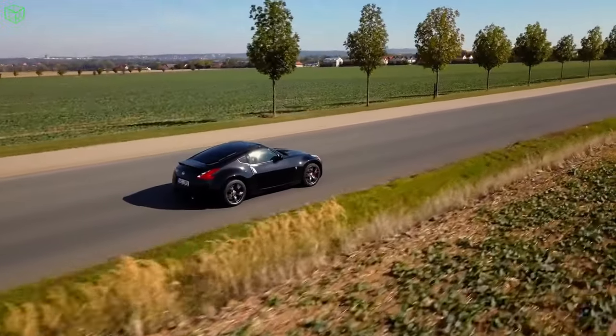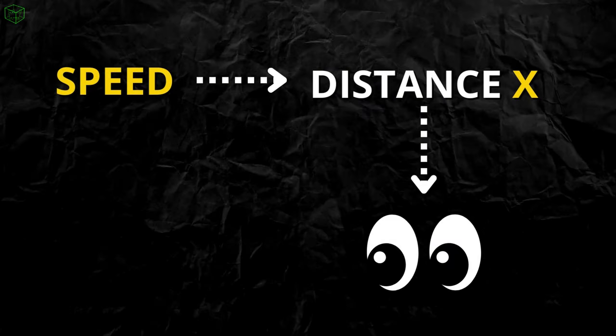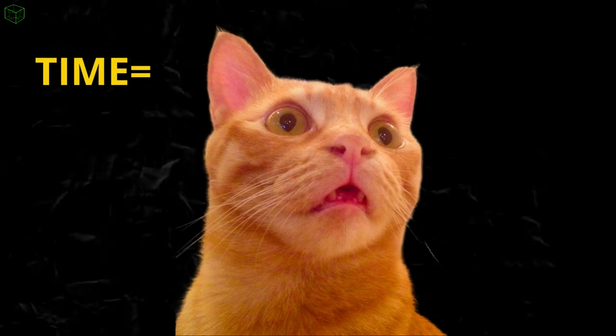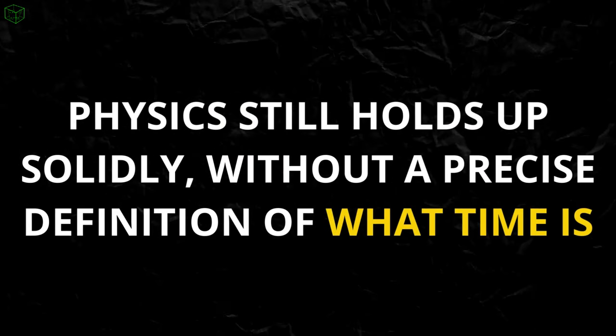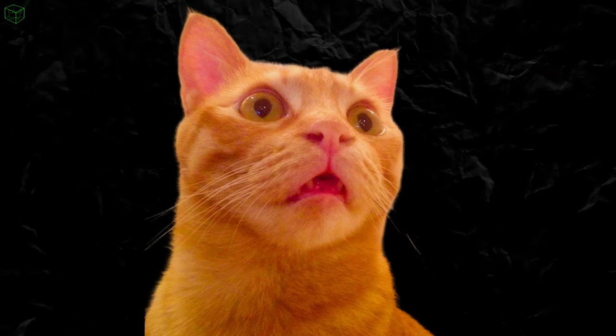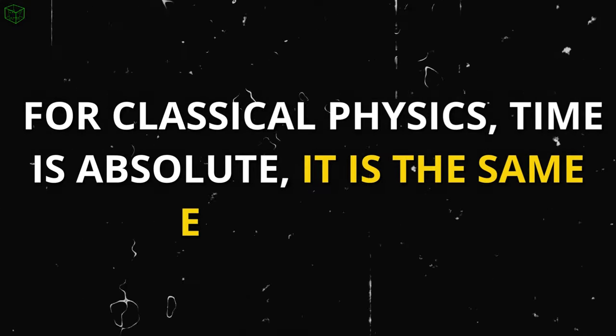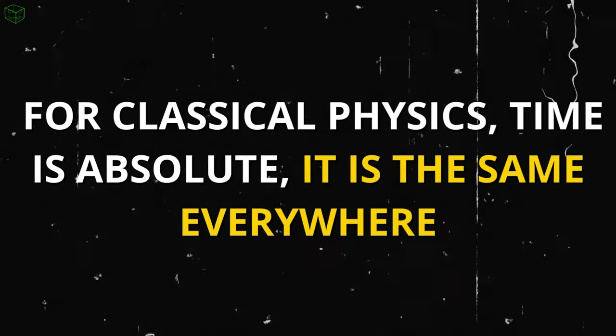I can simply measure the speed by considering a distance x, which I can see with my eyes, and using time, say, how many times my cat blinks between one point and another. If I plug the values into the kinematics calculations, physics still holds up solidly, without a precise definition of what time is. I literally used how many times my cat blinks, and this point is extremely important. In classical physics, you don't need a definition of time, and this is a quite significant statement, stemming from the fact that, for classical physics, time is absolute.